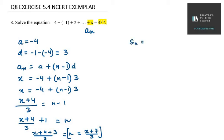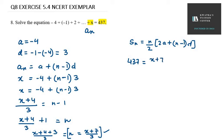Using the formula Sn equals n over 2 times [2a plus (n minus 1)d], and Sn equals 437. Substituting n as (x plus 7) over 3, the 3 goes to the denominator, making it (x plus 7) over 6. Inside the bracket: 2 into a, where a equals minus 4, plus (n minus 1) — substituting n as (x plus 7) over 3 again — into d, where d equals 3.